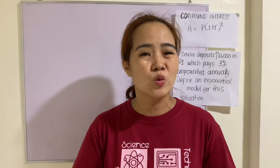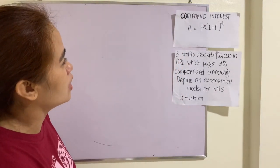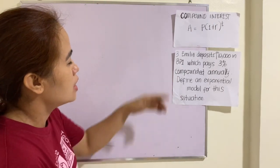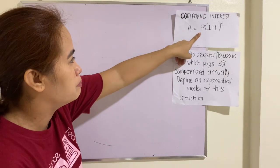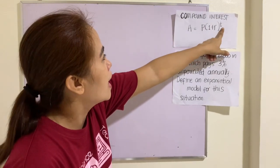Another real-life situation involving exponential function is by using the compound interest. And this is the formula for compound interest. A equals P quantity 1 plus R raised to T. A here is the final amount. P is the principal amount. R is the interest. And T is the time.